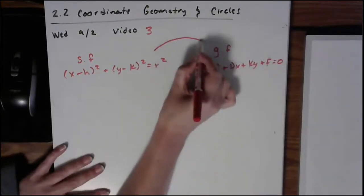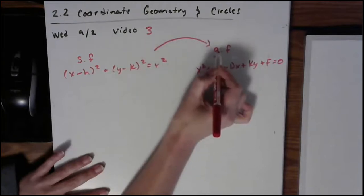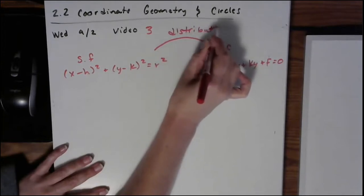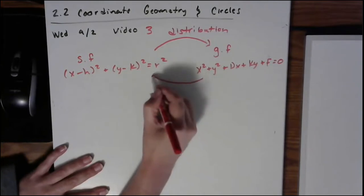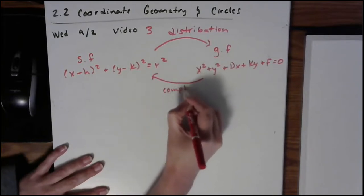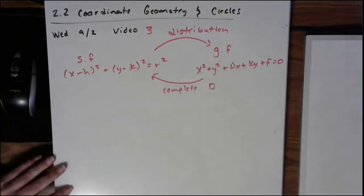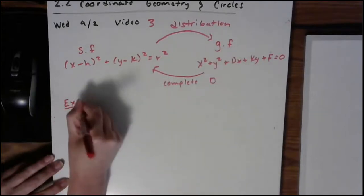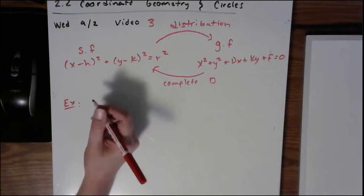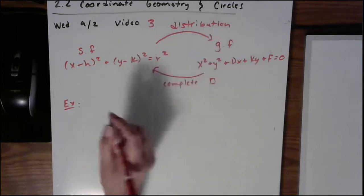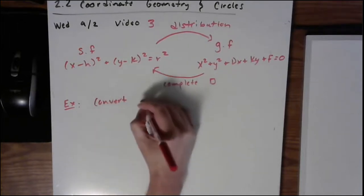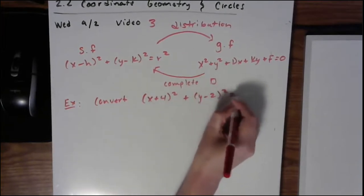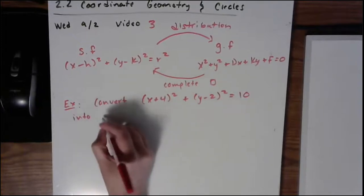If you want to convert from standard form to general form, you just do some distribution and simplification. However, if you would like to go in reverse order, it is quite a bit more complicated because you have to complete the square. Let me first do an example of the easier converting from standard form into the general form. Let's convert our last example, (x + 4)² + (y - 2)² = 10 into the general form.